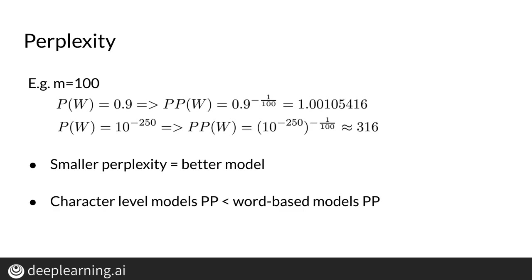Perplexities for character level language models, where you track characters instead of words, will be lower.